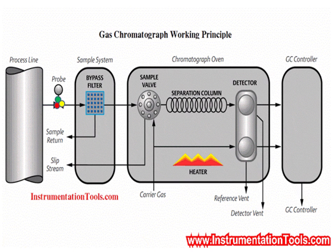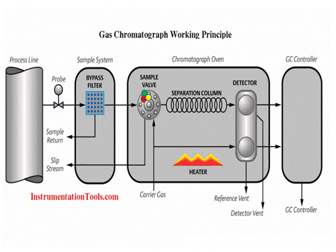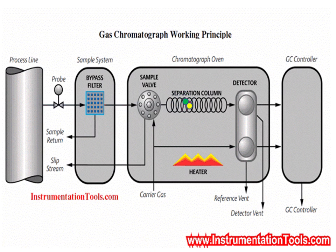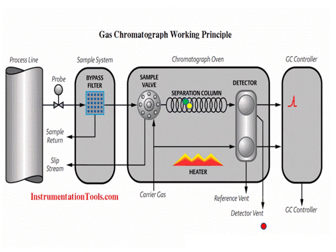GC working principle briefly. The sample gas will be taken from the process pipeline through the GC sampling system. A carrier gas, generally helium, will be used to carry the collected sample gas through the GC column.